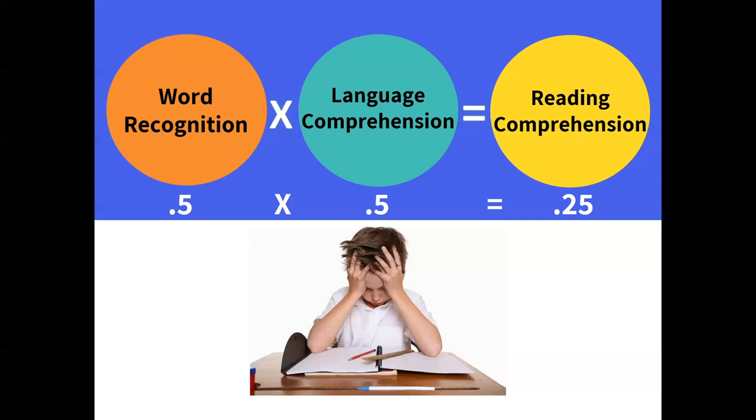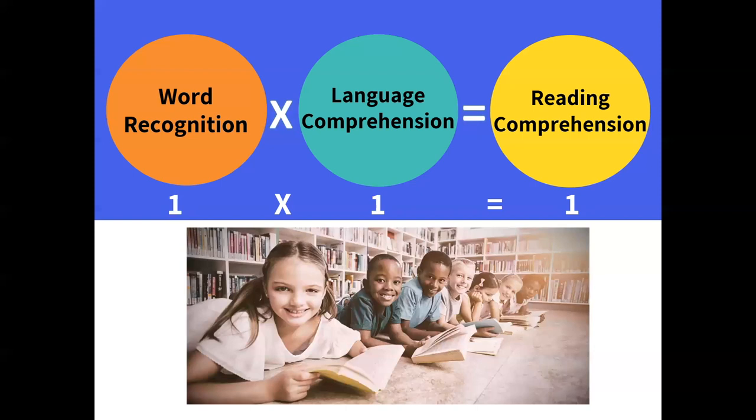What we want for our students is strength in both components: word recognition and language comprehension. I encourage you to keep the simple view of reading in mind as you plan instruction. If you have older students in an intervention focused on reading comprehension, take a deeper look — what are their phonemic awareness skills? Which phonics skills have they mastered and which do they need to revisit? Make sure they are solid in automatic word recognition, and make sure you're building their oral language, vocabulary, and background knowledge. We need to look at those two components of the simple view of reading to help make the best readers we can.